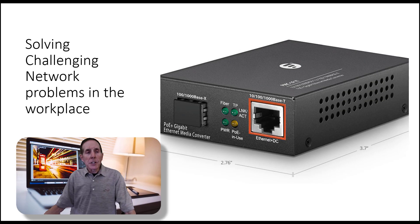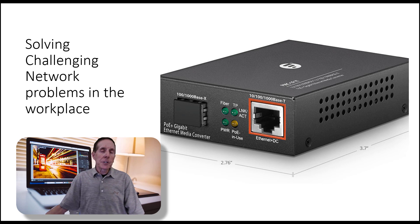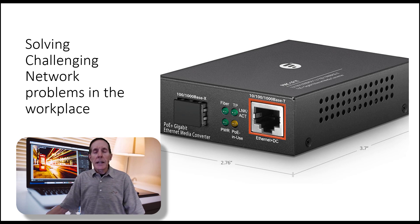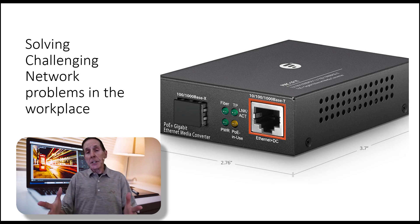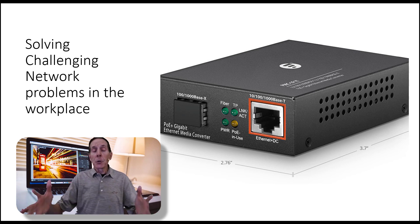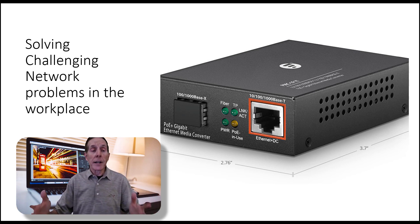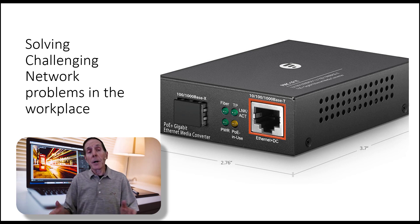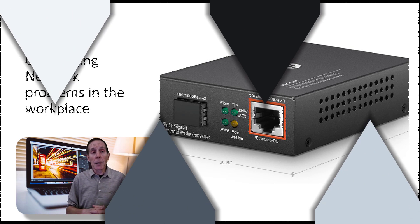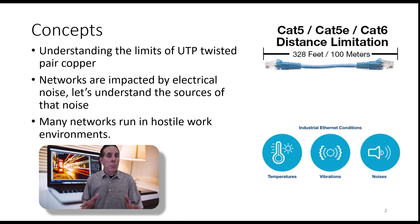We're going to take a look at solving challenging network problems in the workplace. It's really helpful for the IT pro to understand that when you roll out your network, you are running out an electrical system. It is therefore impacted by electrical problems. Case in point, the limits of unshielded twisted pair copper.